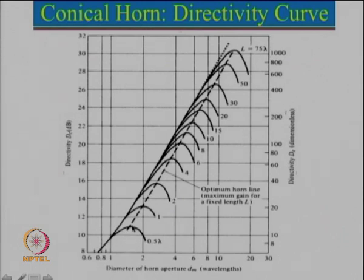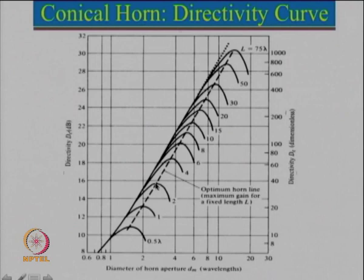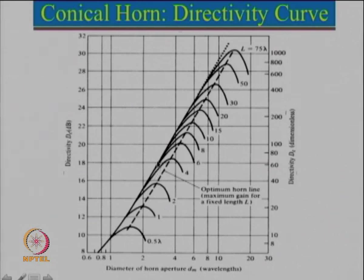After the maximum, directivity decreases. The reason for the decrease is that phase error has increased significantly, which results in reduction of directivity. Taking another case of length equal to 2 lambda, as we keep increasing the diameter directivity increases to a maximum and then starts decreasing. The corresponding maximum value is close to about 15.78, less than 16 dB, but had it gone up linearly it would have been close to 18 dB. So at this particular point we have lost directivity of close to 2 dB, which results in lower efficiency of the horn antenna.